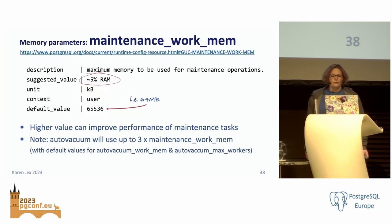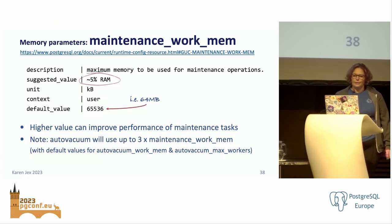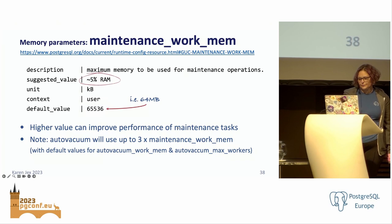maintenance_work_mem is similar, but for maintenance operations like vacuum, CREATE INDEX, ALTER TABLE ADD FOREIGN KEY. The default is 64MB, but much higher values can improve performance of vacuum, restoring database dumps, and similar tasks. You won't usually see lots of concurrent maintenance operations, so it's generally fairly safe to set this to a much higher value — a good starting point is about 5% of your total RAM. By default, autovacuum can use up to three times maintenance_work_mem.